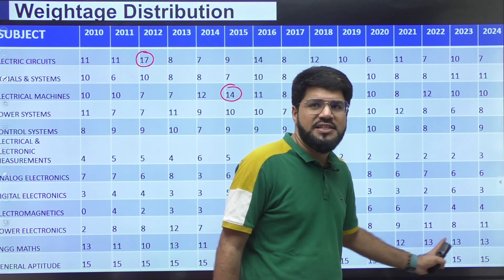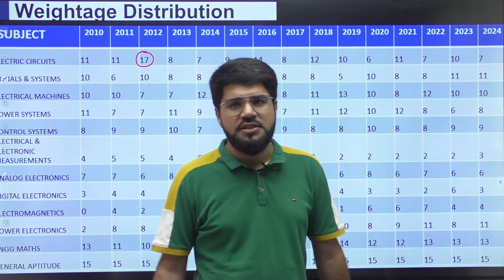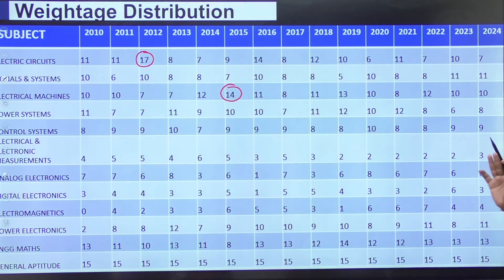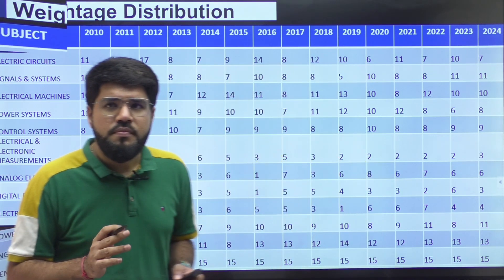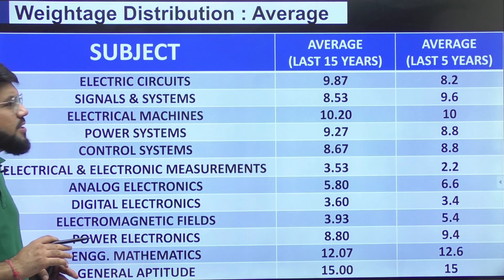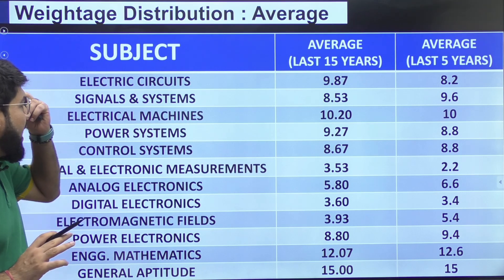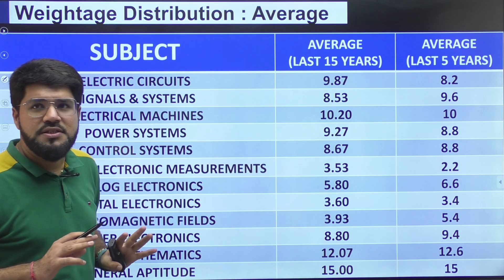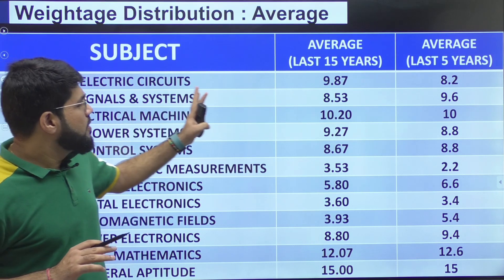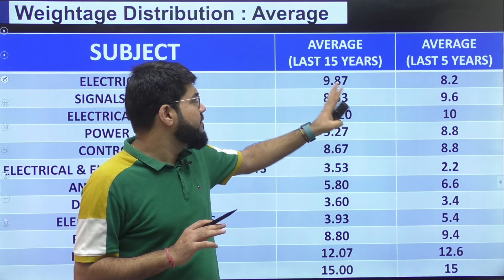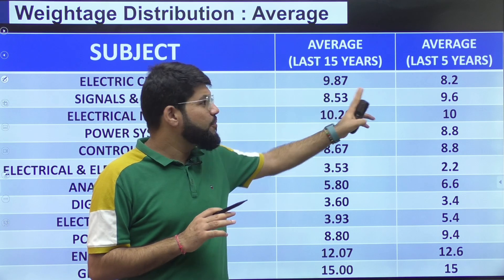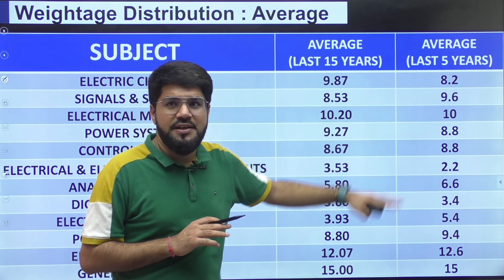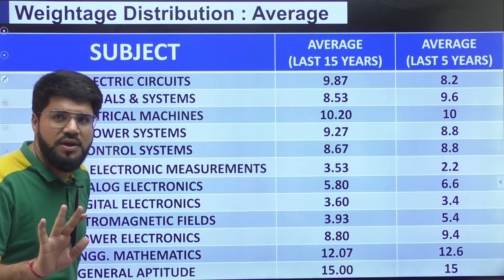For maths, don't look at previous years because the weightage has recently been fixed at 13 marks as mentioned. GA is also fixed. You can take a screenshot of the complete data slide. Now let's talk about averages — I've shown individual years, so highlighting the averages: I've bifurcated last 15 years and last 5 years. Networks: last 5 years average is around 8, previously around 10. Signals and systems: used to be around 8.5, now it's 9.5 to 10, and that trend will continue for upcoming years.